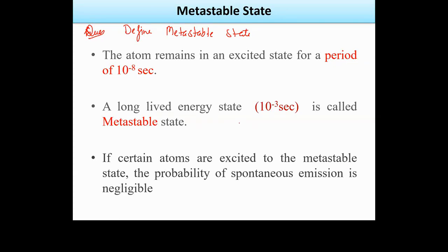We call this meta-stable state. If there is a meta-stable state in the atom, the probability of stimulated emission will increase. But in pure atoms, we don't have meta-stable states — only energy levels. So what do we do for meta-stable state? We add some impurity by adding other atoms.